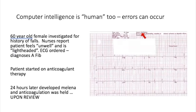Before moving on to waveforms and intervals, an important point: computers can be wrong. ECG machines provide an analysis of each waveform — known as computer intelligence — but they are not always correct, which is why we need to know what we are looking for and complete our own evaluation of the waveforms. The most common interpretation likely to be incorrect is atrial fibrillation. Rhythm patterns such as sinus arrhythmias, atrioventricular blocks, artifacts, and even Wolff-Parkinson-White syndrome can be misdiagnosed by the computer as atrial fibrillation.